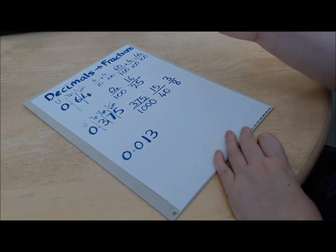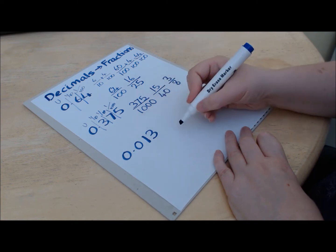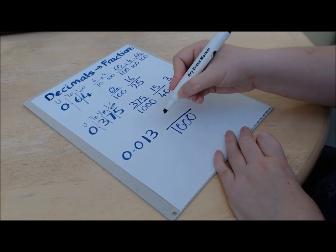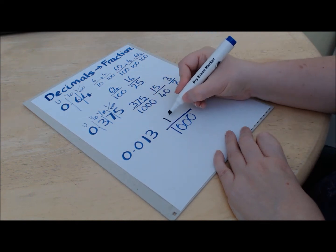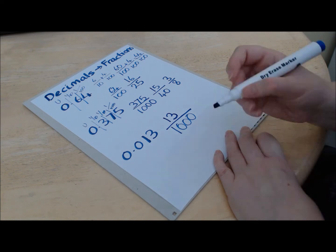So one more time, we're basically looking for what is the smallest part of our decimal. This is thousandths again, so we put a thousand on the bottom and then we just take our number and put that on the top. And then if we can, we simplify it.